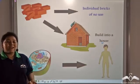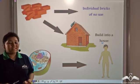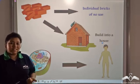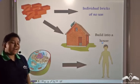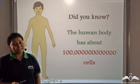Now can you guess the number of cells that are present in our human body? 10,000? 100,000? No. We have 100 trillion cells in our human body.